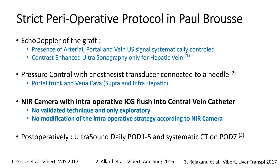This is our strict perioperative protocol at Paul Brousse Hospital. At the end of liver transplantation, we systematically perform intraoperative assessment of the graft, checking for arterial, portal vein, and ultrasound signals. Recently we have used contrast-enhanced ultrasonography to check hepatic vein only, as we have published that this technique has no benefit for the artery and may even have drawbacks due to oversensitivity. We also do pressure control connected via a needle to check portal pressure relative to the vena cava. From around three years ago, we systematically use a near-infrared camera with intraoperative ICG injected into the central vein catheter to evaluate liver vascularization and parenchymal fluorescence patterns.